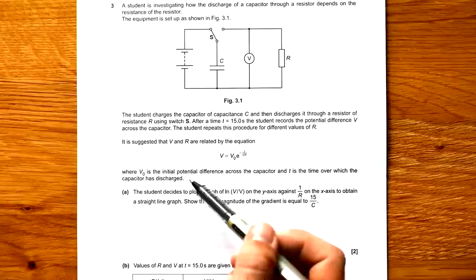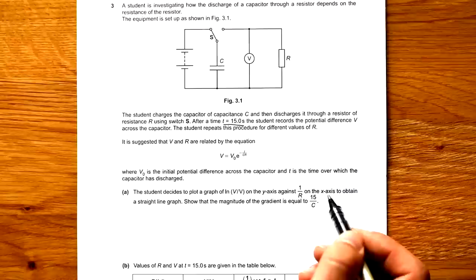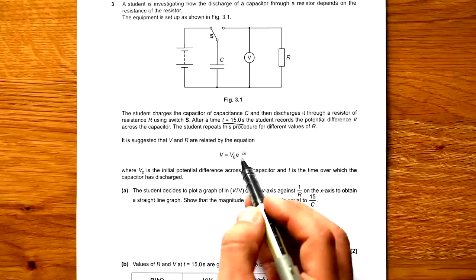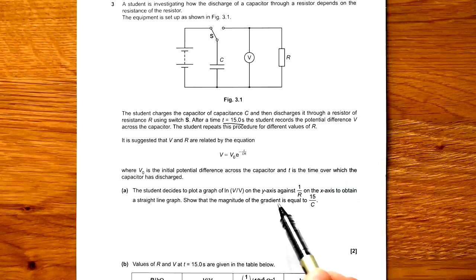Question three: A student is investigating how the discharge of a capacitor through a resistor depends on the resistance of the resistor. A student charges the capacitor, capacitance C, discharge it through resistor. After time 15 seconds, the student records a potential difference across the capacitor. Student repeats the procedure for different values of R. They suggest that V and R are related by the equation this. That is correct. And then we put CR instead of RC, where V0 is initial.